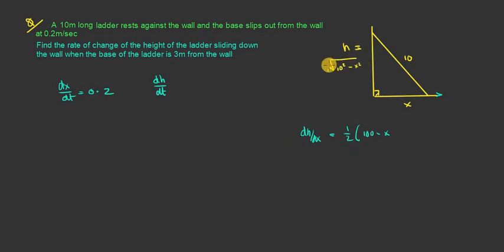So dh dx is equal to 100 minus x squared to the power of a half. So it's equal to a half, 100 minus x squared to the power of minus a half by the derivative of the inside function, which is going to give me minus 2x. That's going to give me a half multiplied by 1 over the square root of 100 minus x squared, multiply by minus 2x. That simplifies out.